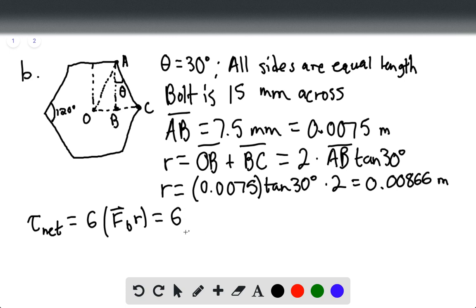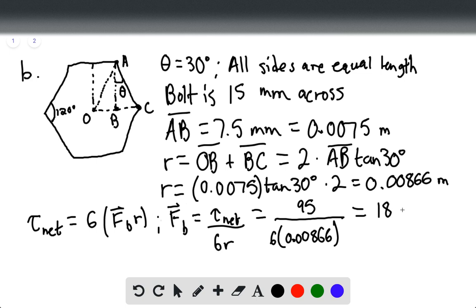Rather, we're trying to find the force on the bolt, so we should isolate that and say that force on the bolt is going to equal T net divided by 6R, or 95 divided by 6 times 0.00866, and this is going to equal 1,828.33 newtons.